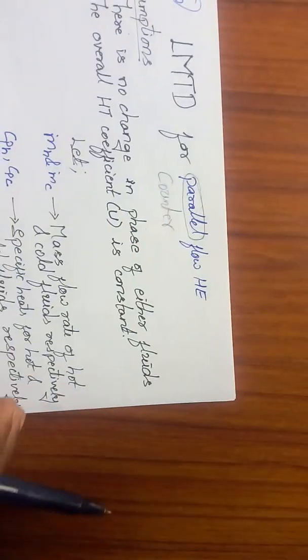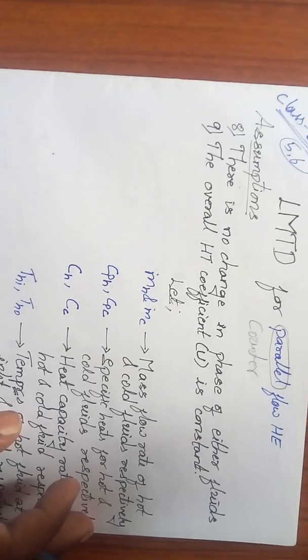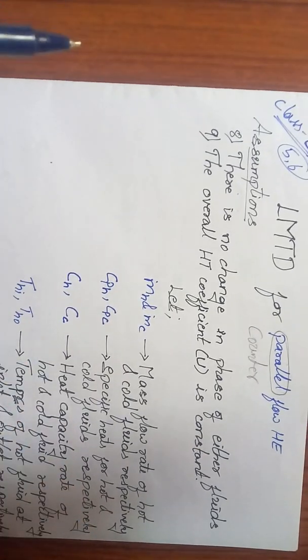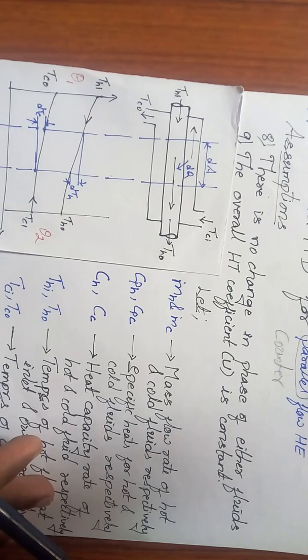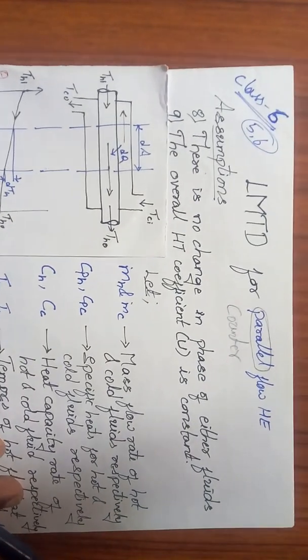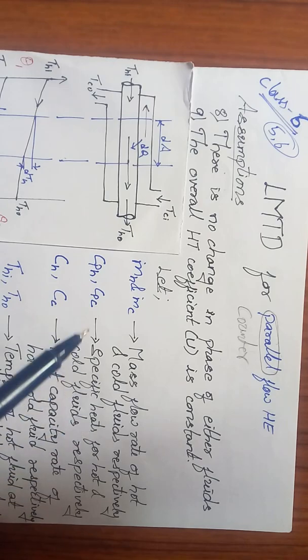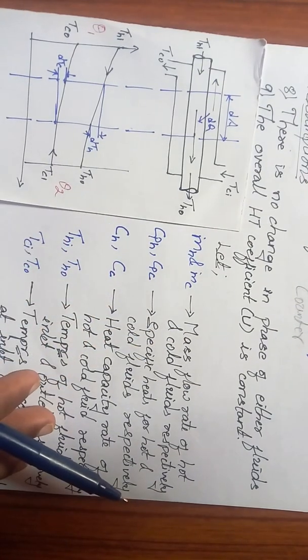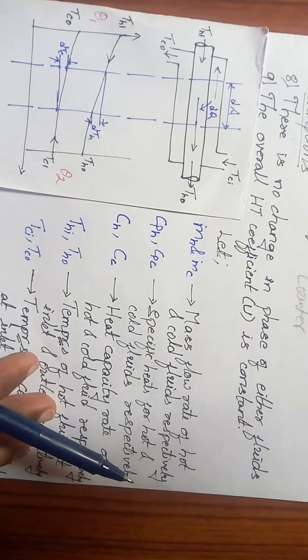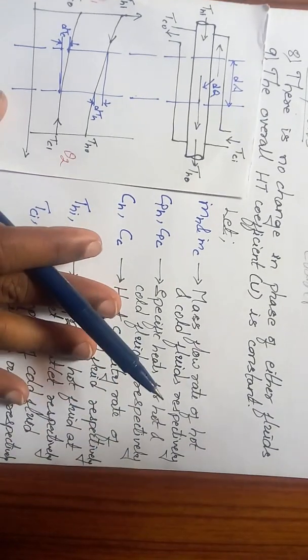Same thing you need to write in your exam. You cannot skip this. You need to write all these things till equation number 2. This you will get in class 6. Now coming to the NTU for counter flow heat exchanger, write all this LMTD procedure.